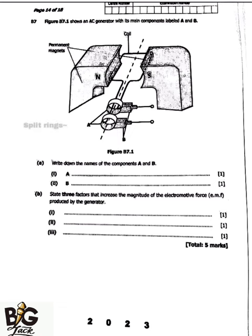The part labeled A is called the split rings. The part labeled B is called the carbon brushes. This is specifically an AC generator because of the two split rings it has.